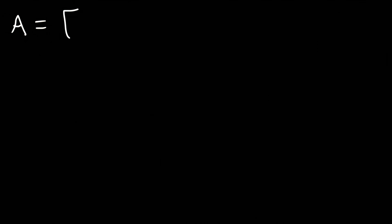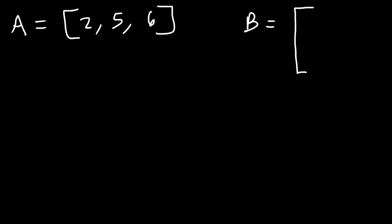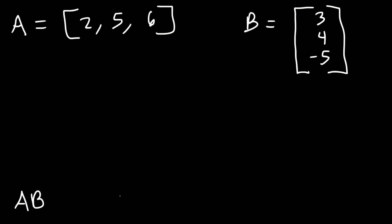In this video we're going to focus on multiplying matrices. Let's say matrix A has the elements 2, 5, and 6, and matrix B contains the elements 3, 4, and negative 5. Let's find the product of AB and BA.